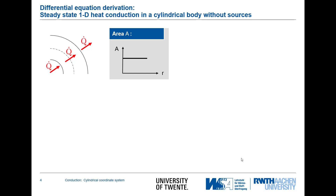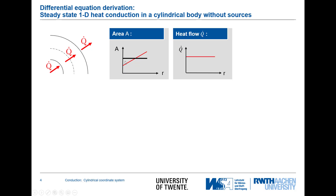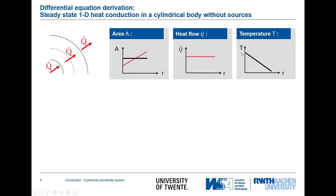Let's look at profiles. For the plane wall (shown in black) the area is constant, but for a pipe wall the area increases with radius. The heat flux is constant across the wall in both cases. Consequently, the temperature profile — a straight line for the plane wall — becomes a concave-shaped curve in the cylindrical coordinate system, because the driving potential gradually decreases as the area increases.